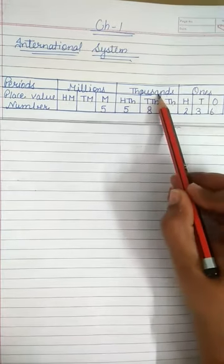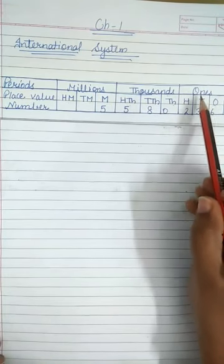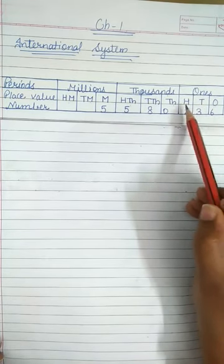Ones period, thousands period, million period. And each period have three places. Ones period have three places that is ones, tens, hundreds.